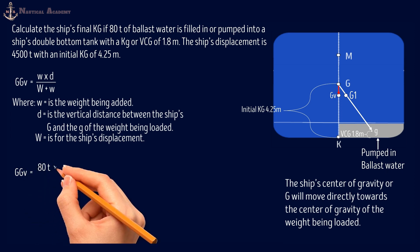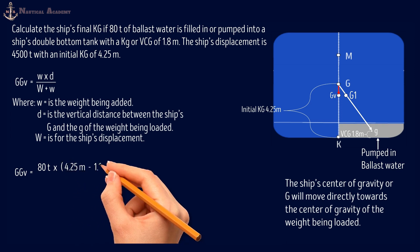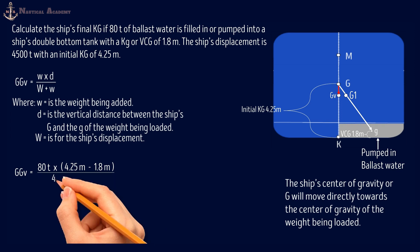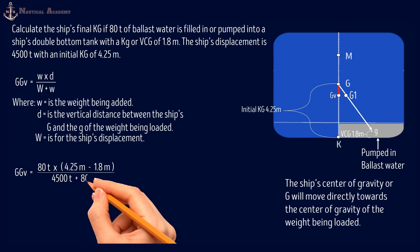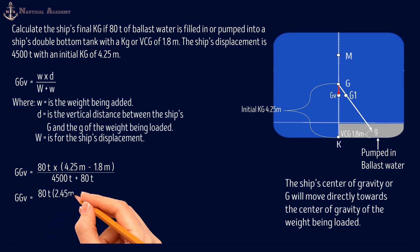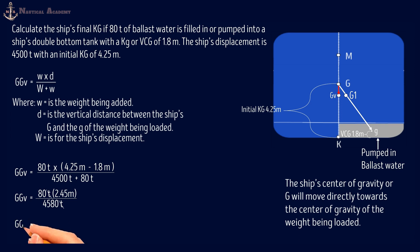GGv = 80 tons × (4.25 − 1.8) meters, divided by (4,500 + 80) tons. That gives 80 × 2.45 ÷ 4,580. The vertical shift of G, GGv, equals 0.043 meters.